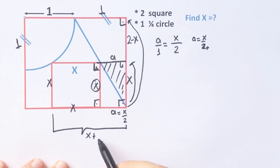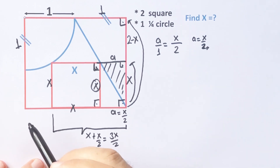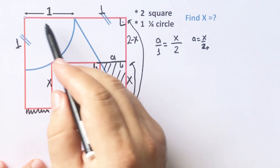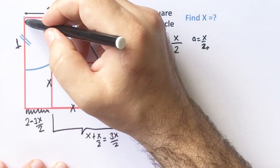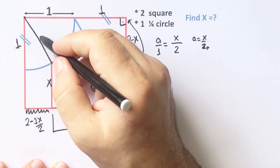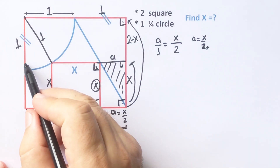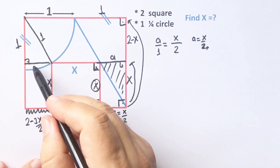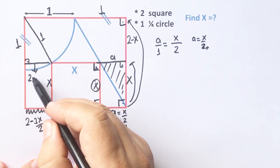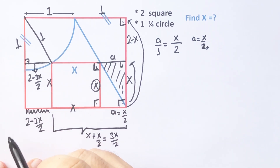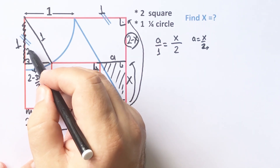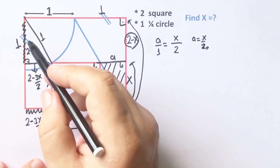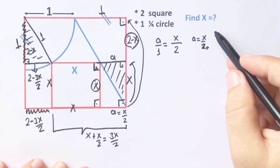This length must be equal to x plus x over two, so three x over two. Therefore, two minus three x over two is left here. Then if you connect here, this length is also one unit. Drawing a perpendicular line, this length must equal two minus three x over two, and this length must equal two minus x.